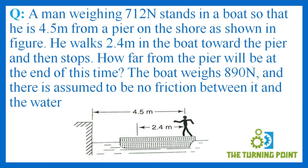From the figure, the man is at a distance of 4.5 meters from the shore/pier, and he is walking towards the pier covering a distance of 2.4 meters. If the boat were not moving, we could directly say the distance of the man from the pier is 4.5 minus 2.4. But since the boat has velocity and the man is also moving, we need to apply the law of conservation of momentum.